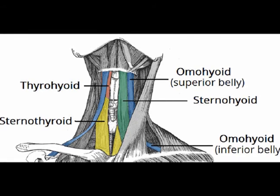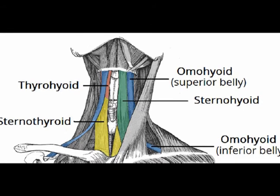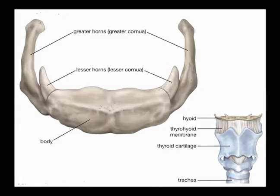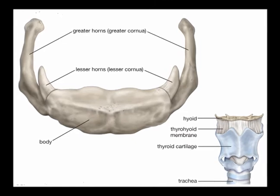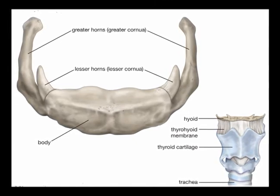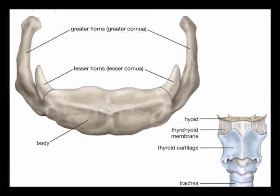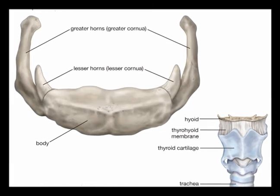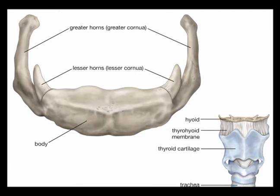The hyoid is attached to the cervical spine posteriorly via the cervical fascia. The hyoid bone is a small U-shaped solitary bone. It is situated in the cervical spine anteriorly at the base of the mandible and posteriorly at the fourth cervical vertebrae.